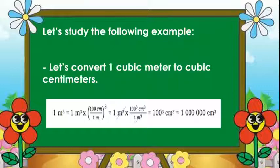Let us study the following example. Let's convert one cubic meter to cubic centimeters. We can see that one cubic meter is equal to 100 centimeters multiplied by itself for three times. When you multiply 100 times 100 times 100, you will arrive at 1,000,000 cubic centimeters. So the answer would be 1 cubic meter is equal to 1,000,000 cubic centimeters.